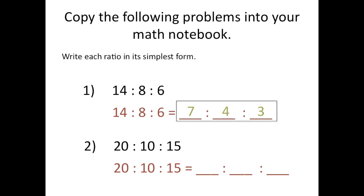Did you have time to solve it on your own? Okay so let's go over how we would simplify 20 to 10 to 15. I know that 20, 10, and 15 can all be divided by 5. So I'm going to divide each quantity by 5. And when I simplify this ratio I will get 4 to 2 to 3 because I've divided each quantity by 5. And I can box that because now that is my ratio in simplest form.